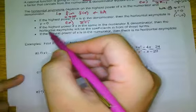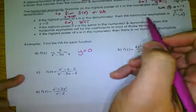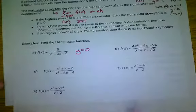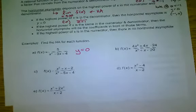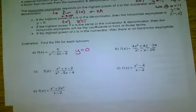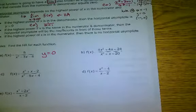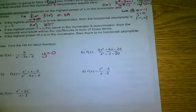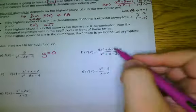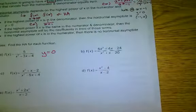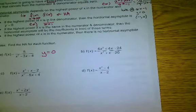Rule 2: if the highest power of x is the same in the numerator and denominator, the horizontal asymptote will be the ratio of the coefficients in front of those terms. Looking at letter B, the highest power is x squared on top and bottom. The coefficients are 4 and 1.